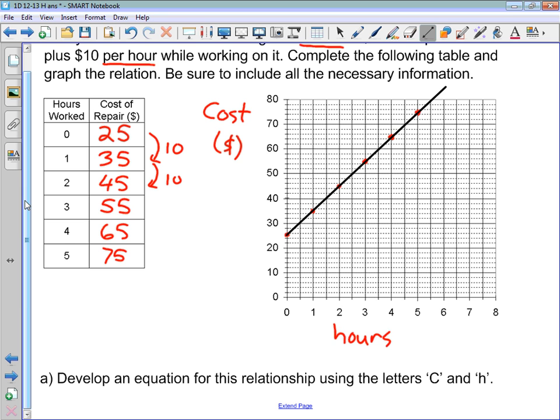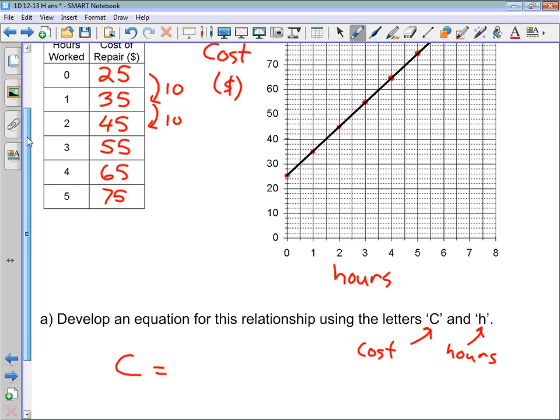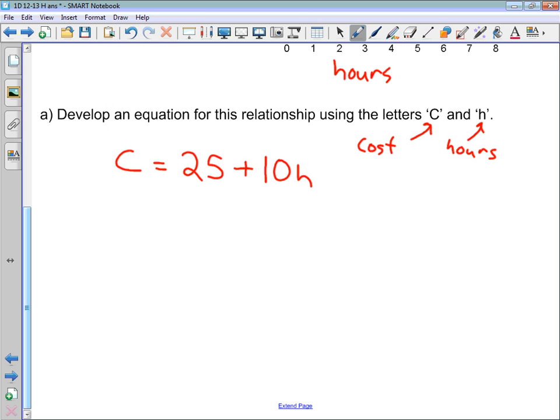Next, we're asked to develop an equation for this relationship using the letters C and H. C obviously is going to represent the cost. H is going to represent hours. So how do we figure out the cost from the number of hours? We had this 25 no matter what. So that's like our flat fee or our fixed cost. So we're going to have that no matter what goes on. And then we're going to add to it $10 times the number of hours we have, because it was $10 per hour. So, C equals 25 plus 10H, or C equals 10H plus 25. And that puts it back in that familiar form, Y equals MX plus B, where instead of X and Y, we have H and C.